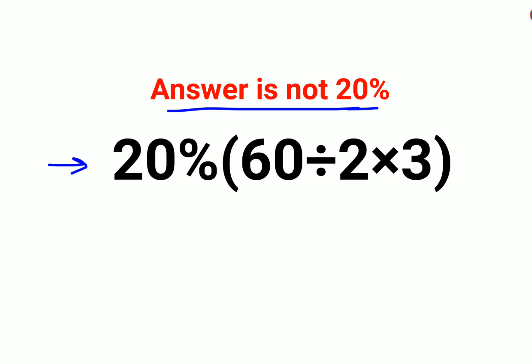We have 20%, then there is a bracket: 60 divided by 2 into 3. Please understand, let's focus on 60 divided by 2 into 3.